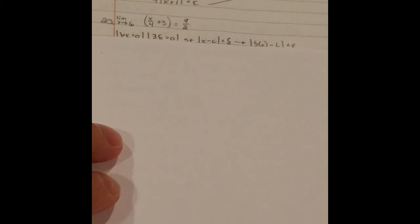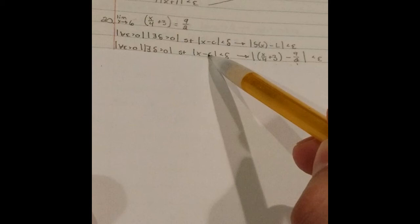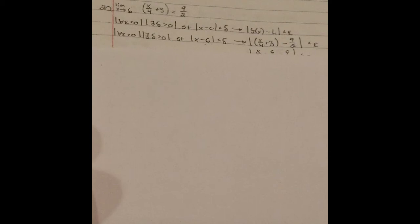Question 20: the limit of x as it approaches 6 for x over 4 plus 3 equals 9 halves. Again, step 1 — tried and true: for all epsilon greater than 0, there exists a delta greater than 0, such that x minus c less than delta implies f(x) minus L less than epsilon. The first number that goes in is c, which is 6, f(x) is x over 4 plus 3, and L is 9 halves.